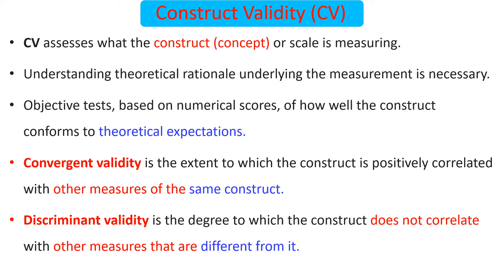Construct validity asks what the construct or scale is actually measuring. Understanding the theoretical rationale underlying the measurement is essential here. This is an objective test because it is based on numerical scores — software like AMOS can be used to assess how well the construct conforms to theoretical expectations. Construct validity is subdivided into convergent validity, which is the extent to which a construct is positively correlated with other measures of the same construct, and discriminant validity, which is the degree to which a construct does not correlate with measures of different constructs. For discriminant validity, we expect low or no correlation.